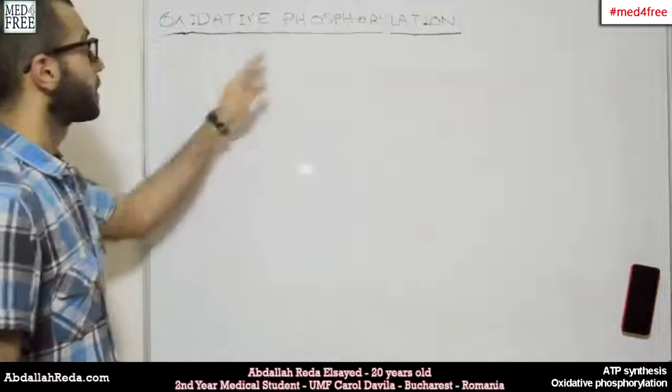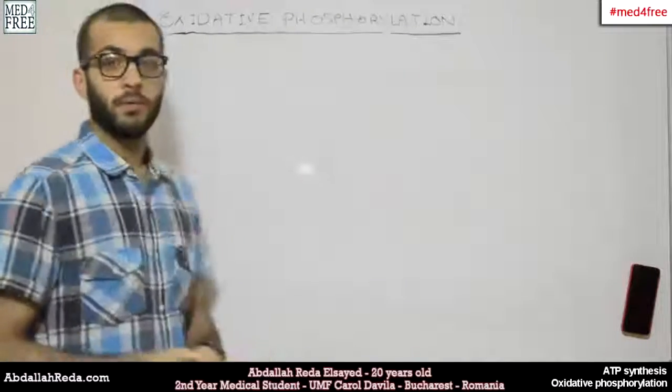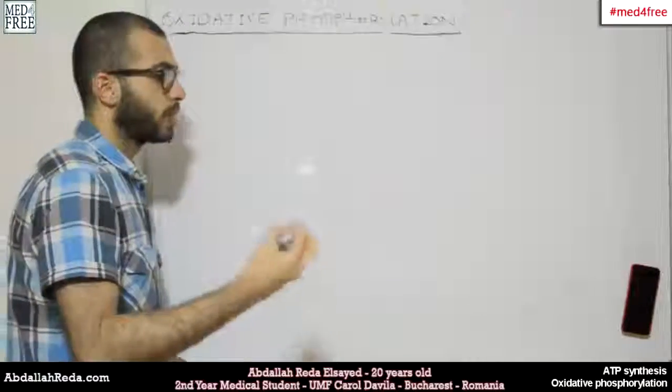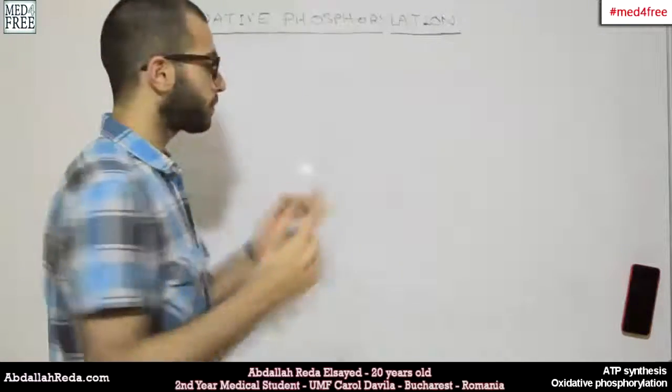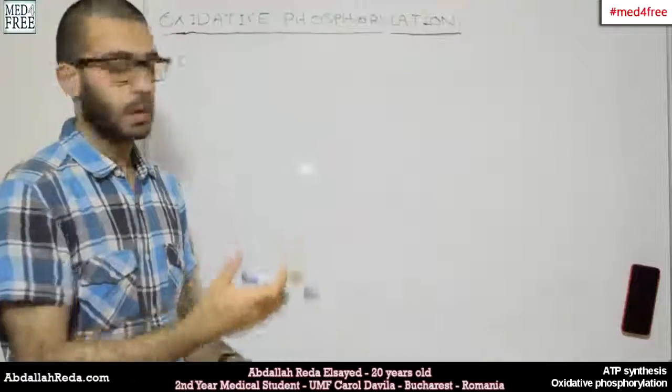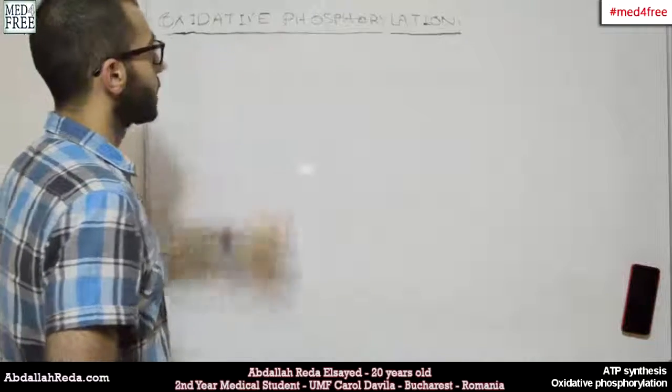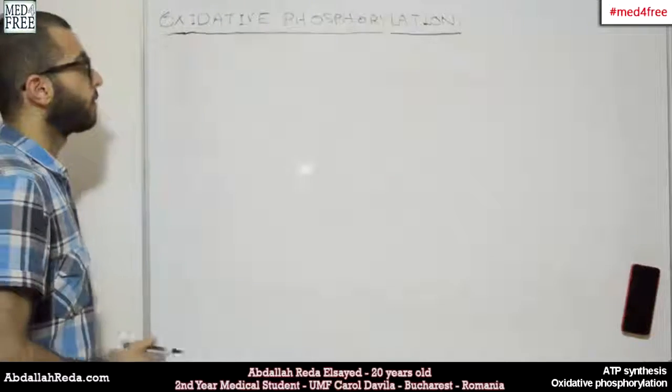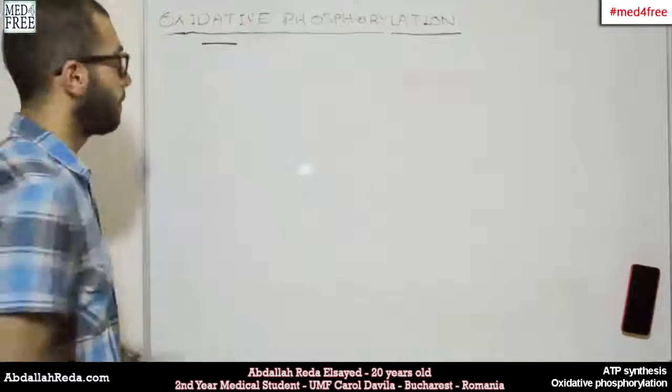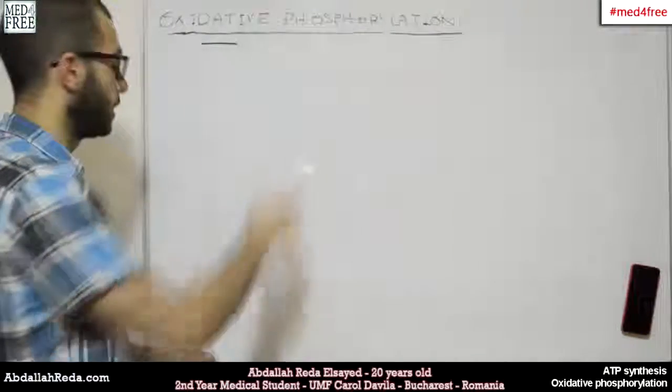This time we're going to talk about oxidative phosphorylation. Last time we talked about substrate-level phosphorylation, which is the process through which we can obtain ATPs from the transformation of a substrate to another substrate through the respiratory cycle. Now we're going to talk about this kind of phosphorylation, and from the name we can understand that we need oxygen throughout this cycle.